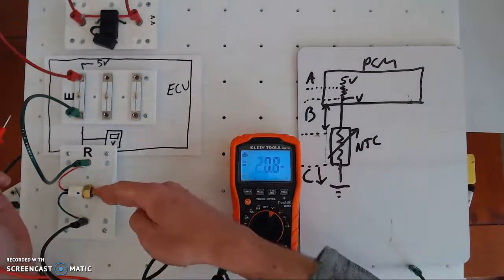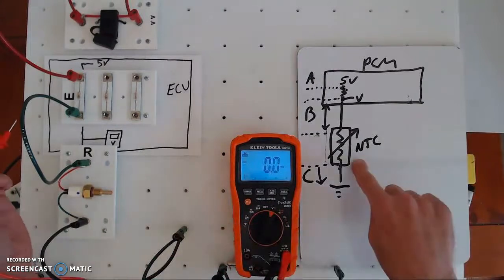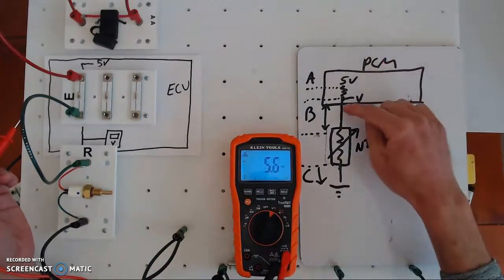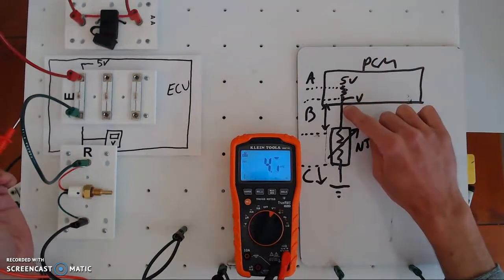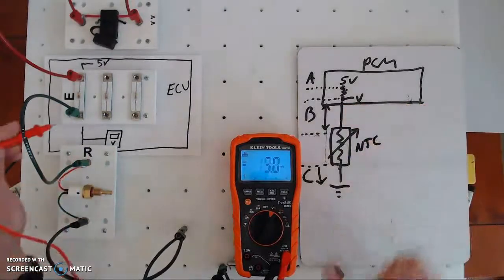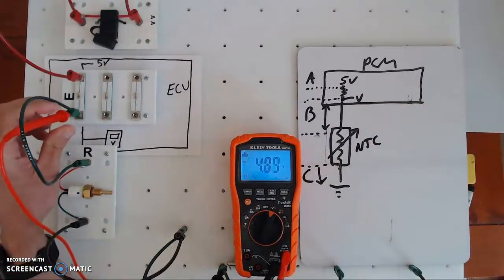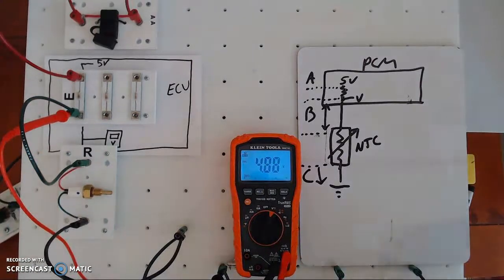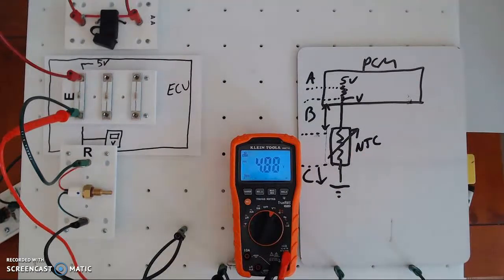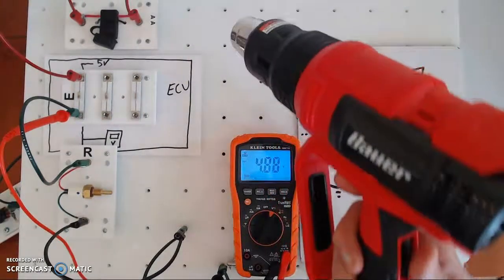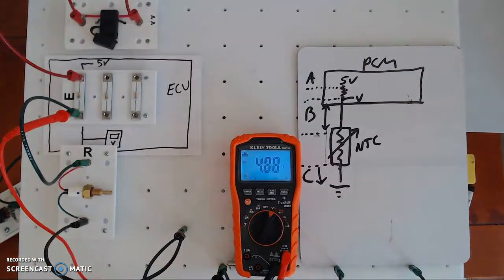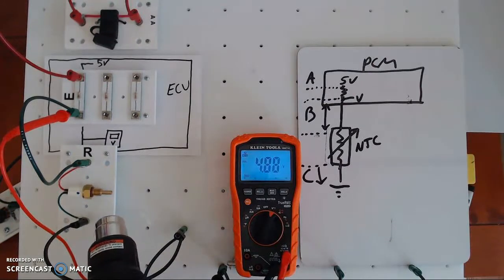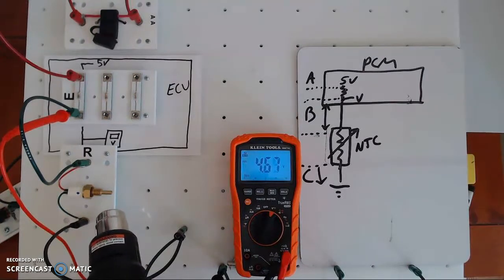All I did was switch the switch out for a thermistor — the circuit is the same. When I diagnose this and want to know if the circuit's working, I back-probe right here at the computer with my voltmeter, monitoring that same section. I'm getting 4.89 volts because it's cold — not 5 volts, but 4.8-something because this thermistor has a lot of resistance. Now I have a heat gun — let me fire this up and apply heat to that sensor and watch my voltage change.